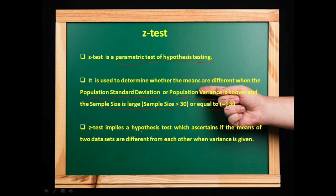Z-test implies a hypothesis test which asserts if the means of two datasets are different from each other when variance is known.